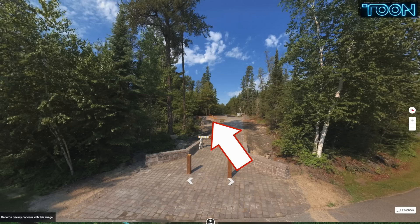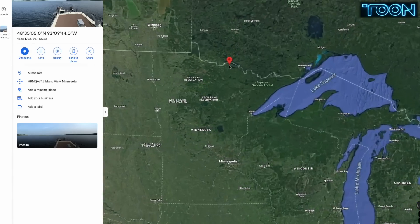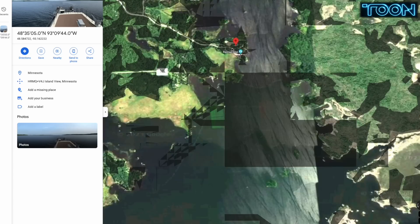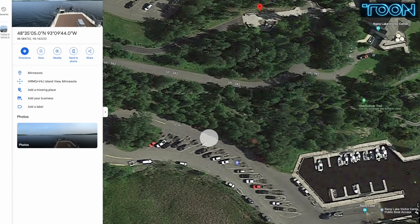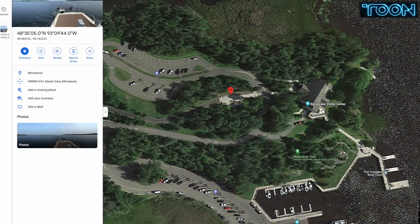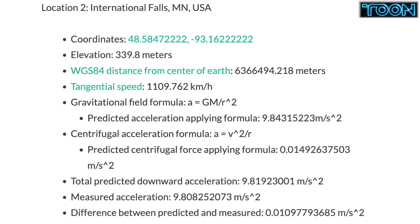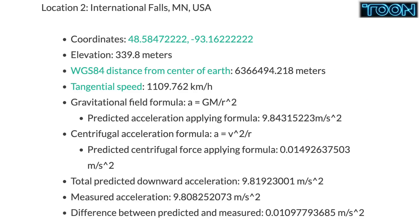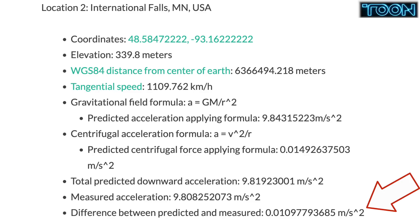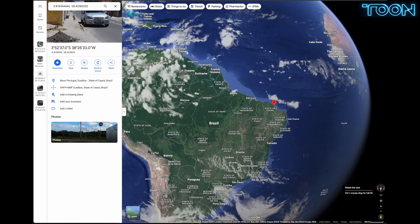Now we'll do the same process for a measurement in International Falls, Minnesota, near where a friend, George Natchik, used to live. Here's a street view photo of where the location is, just up those steps. The location is 48 degrees 35 minutes 5 seconds north latitude, 93 degrees 9 minutes 44 seconds west longitude, and the elevation is 339.8 meters. This gives a distance to the center of the Earth of 6,366,494.218 meters. The total prediction is 9.81923001 meters per second squared, and the measured value is 9.808252073 meters per second squared, a difference of only 0.01097793685 meters per second squared.